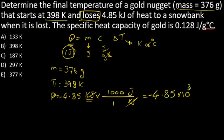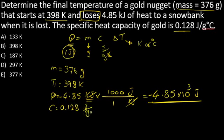The specific capacity of gold is given as well, so the specific capacity is 0.128 Joules per gram per Celsius.